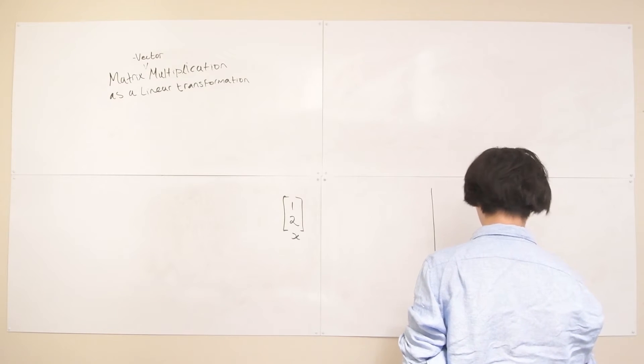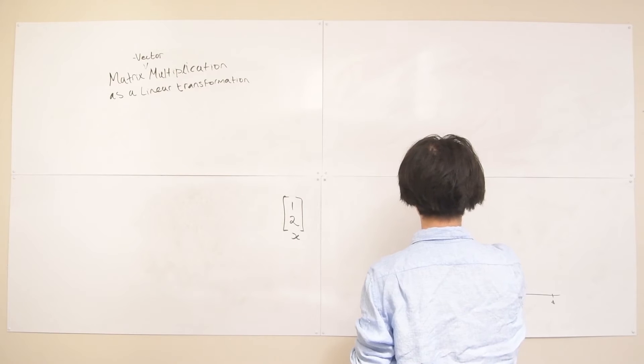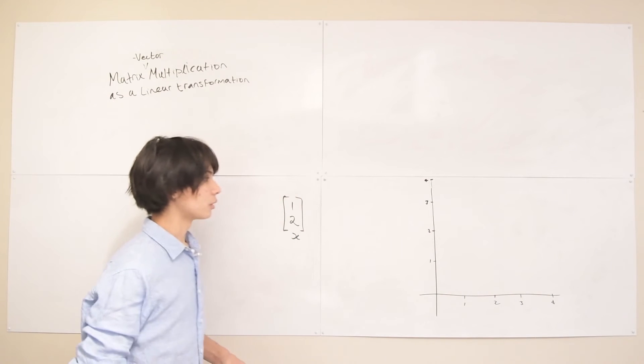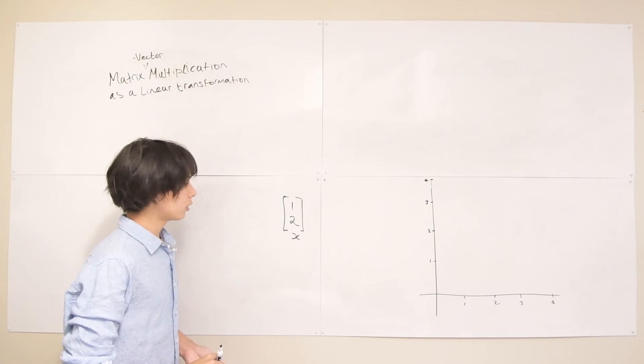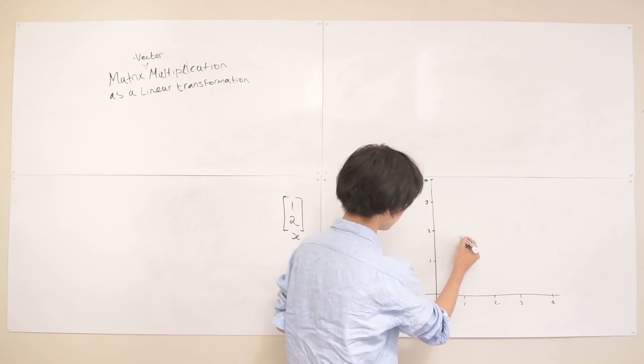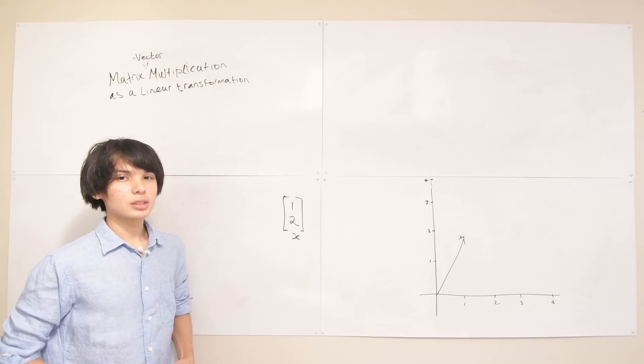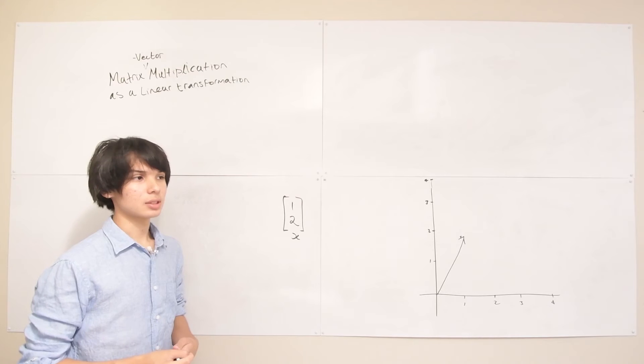So let's plot out this [1, 2] vector on there. So [1, 2] is going to be here. All right, so now let's create some transformation matrix T.